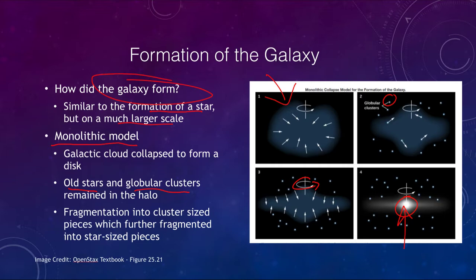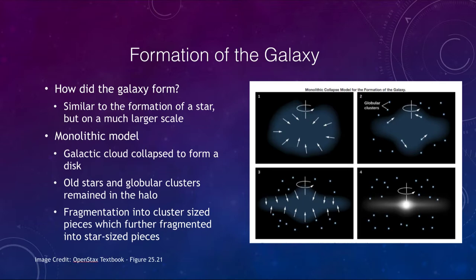So it was old stars in the globular clusters that formed first; once they formed they remained in the halo. It was only gas clouds that would collapse down into the disk to form future generations of stars. The halo would have had no gas and dust, so things would undergo fragmentation — slowly breaking apart into cluster-sized pieces, then into star-sized pieces — eventually going through the types of star formation we've looked at previously.